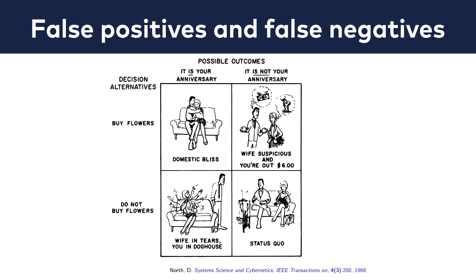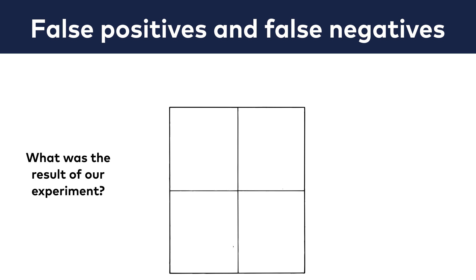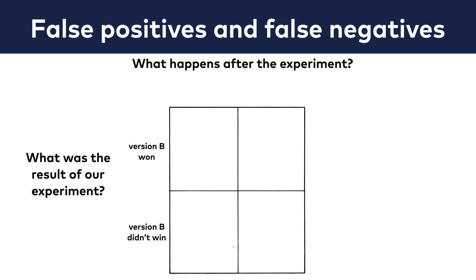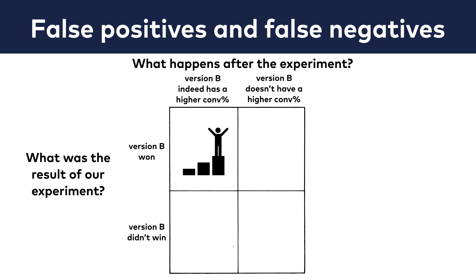Let's see this with an A/B testing example. Our version B seems to be winning, and we want to figure out whether our winning version B is better in real life too. The vertical part of the matrix is what we got as a result in our experiment — version B won or didn't win. We compare that to what happens after the experiment: version B indeed has a higher conversion rate, or it doesn't. If version B has won the A/B test and then after publishing it keeps delivering better results, that's a true positive.